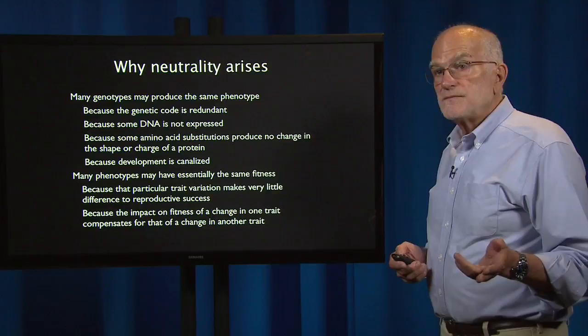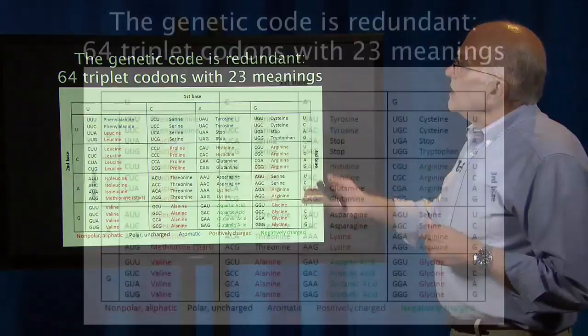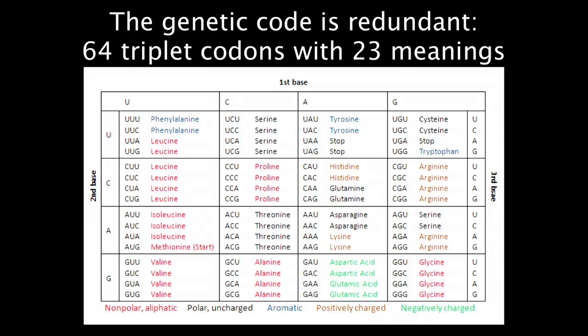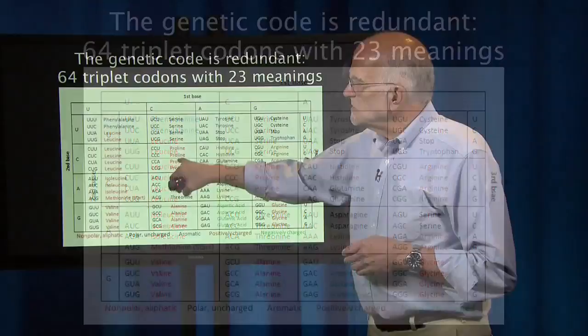Let's unpack those conditions. First, the genetic code is redundant. It produces 23 different meanings — either a start or stop codon, or coding for a particular amino acid — and it uses 64 triplet codons to do so. For example, proline is coded for by four different codons, with variation usually at the third position. All DNA sequences coding for proline start with CC.